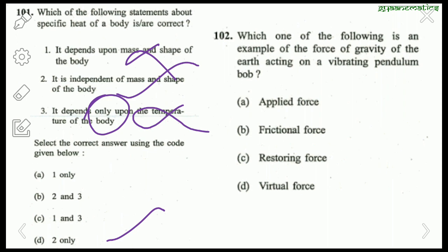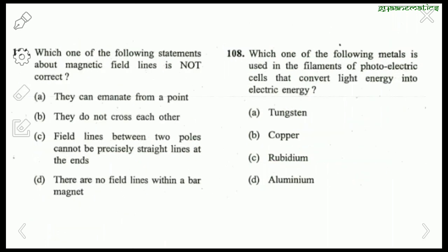Which is an example of the force of gravity acting on a vibrating pendulum bob? The force of gravity is the restoring force in a vibrating pendulum bob. Question about magnetic field lines — which is not correct? 'There are no field lines within the bar of the magnet' — this is wrong, there are field lines within the bar magnet. So the right answer is D.